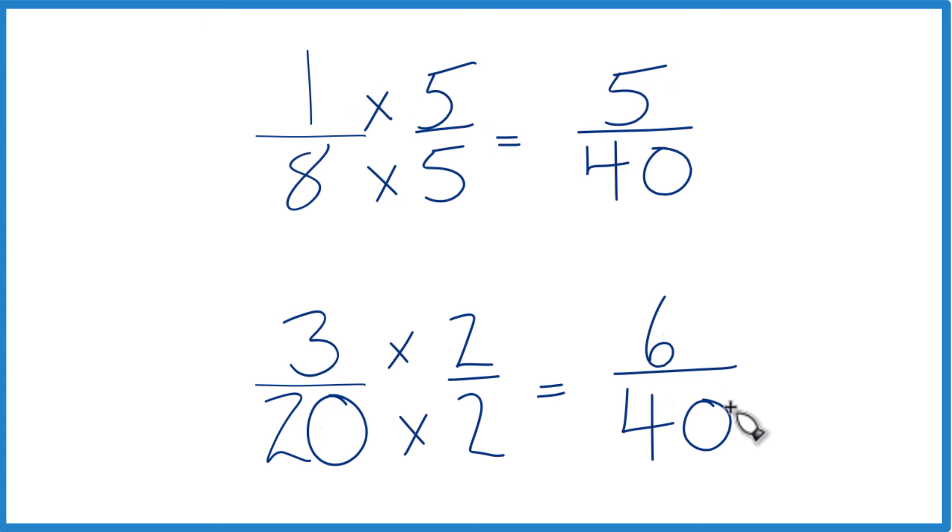Now, same denominator, we just compare the numerators. And 6 is greater than 5. 6 fortieths, that's greater than 5 fortieths. Not by a whole lot, just 1 fortieths, but it's still greater.